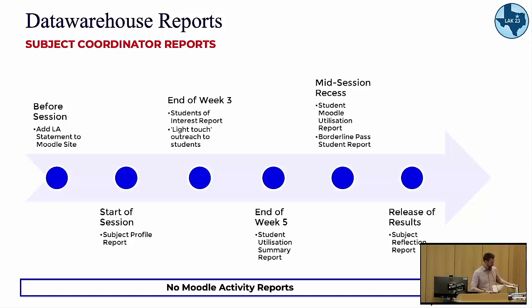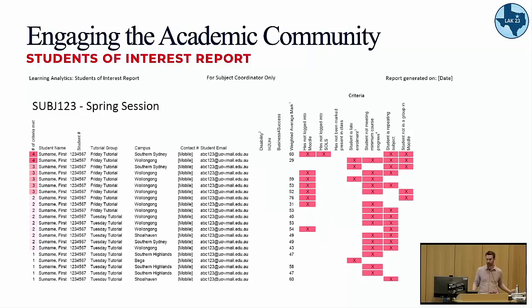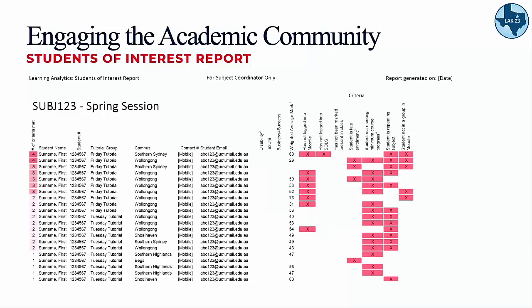Here is an example of what we call our students of interest report — not an at-risk students report — identifying students that are struggling to get their studies underway in the first couple of weeks of session. We use a number of different criteria and rank students based on how many criteria they meet, so those hitting the most appear at the top. If you're teaching a large subject of 800 or 900 students, you have a one-page list to focus your attention on.